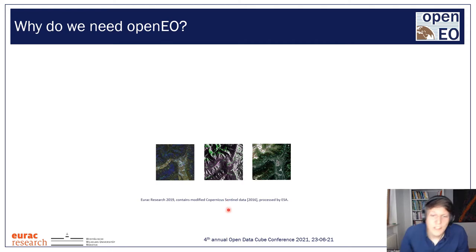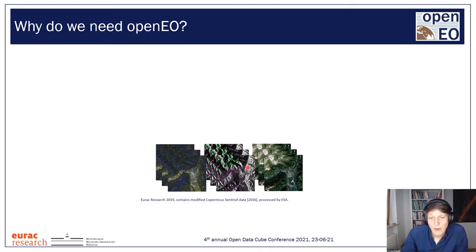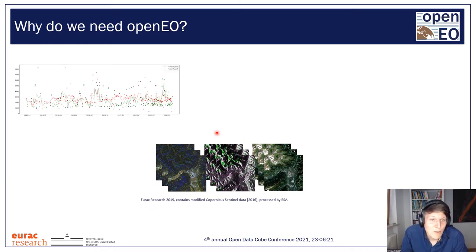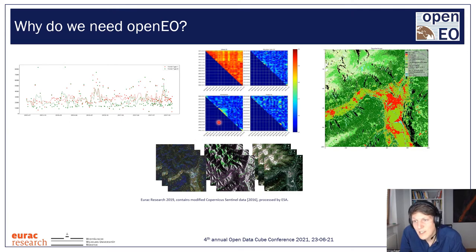Why do we need OpenEO? We have a lot of nice datasets available, for example from the Copernicus mission — the Sentinel data — and we have a long time series of those. All we want to do is some simple analysis: following trends in a pixel, comparing them with each other, doing more advanced analysis on radar data — maybe coherence or classic generation of land cover maps.